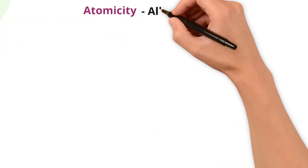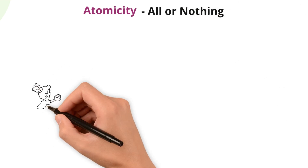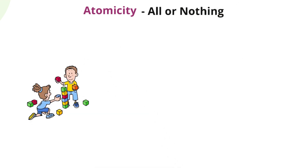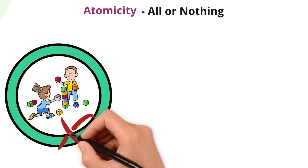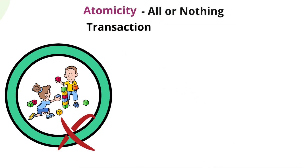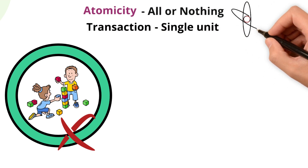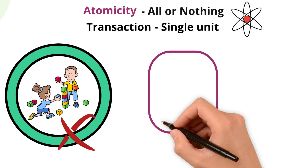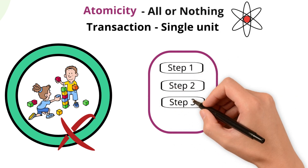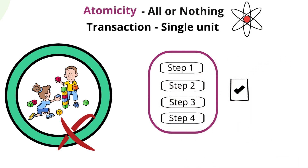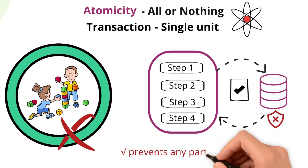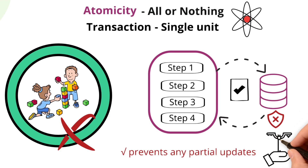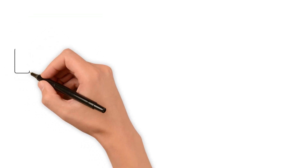Atomicity — this is the all-or-nothing rule. Imagine building a Lego house. With atomicity, either the entire house gets built or none of it does. Similarly, a transaction is treated as a single unit, which is unbreakable like an atom. A transaction can include one or more steps or changes. Atomicity ensures that all changes succeed, or the database rolls back everything if something fails midway, preventing any partial updates that could compromise the integrity of your data.